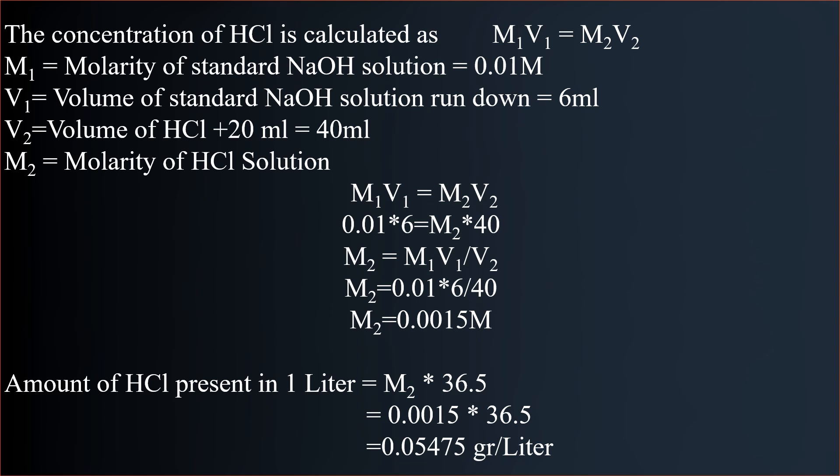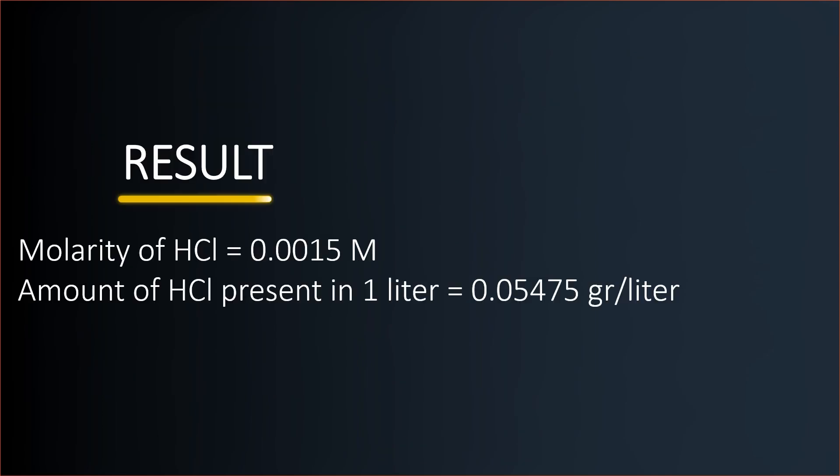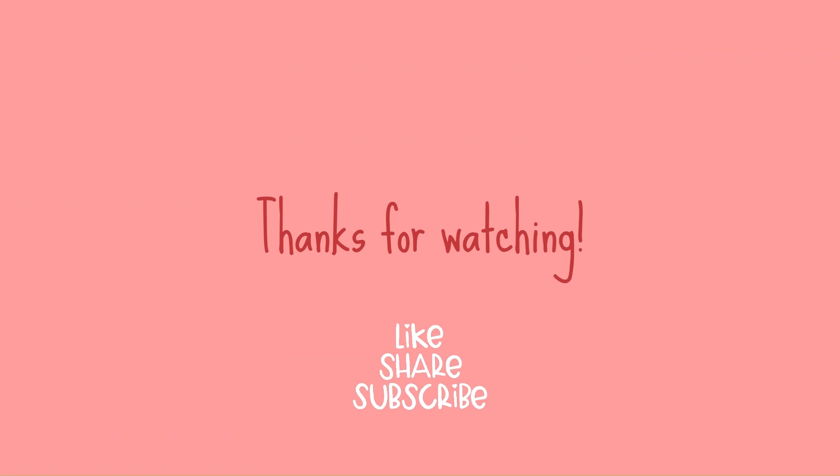Amount of HCl present in 1 litre = M₂ × 36.5 = 0.547 g/L. Result: Molarity of HCl = 0.0015 M and amount of HCl present in 1 litre = 0.05475 g/L.